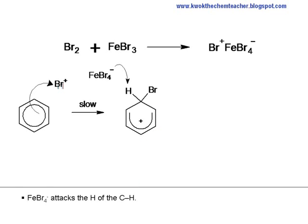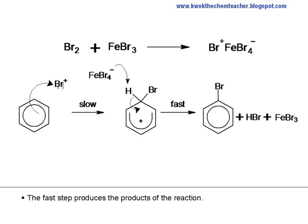FeBr4- attacks the hydrogen of the C-H bond. This results in the C-H bond to break in a heterolytic fashion. The fast step produces the products of this reaction.